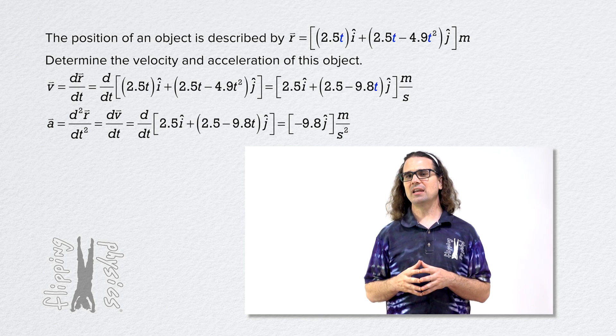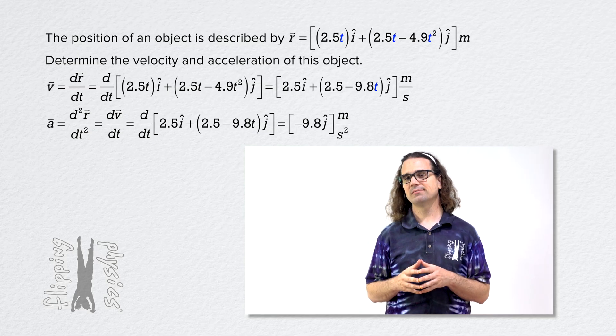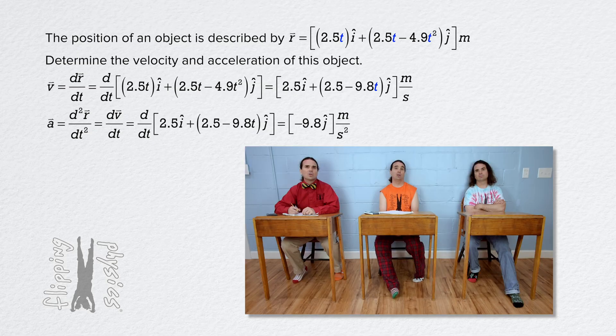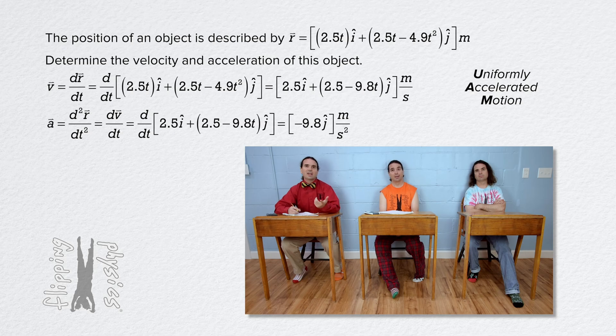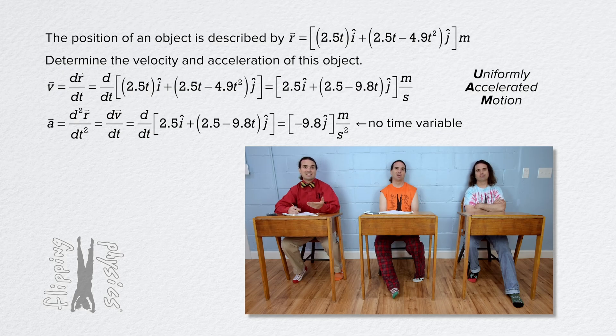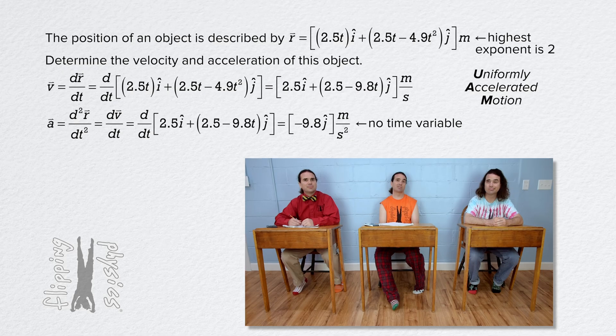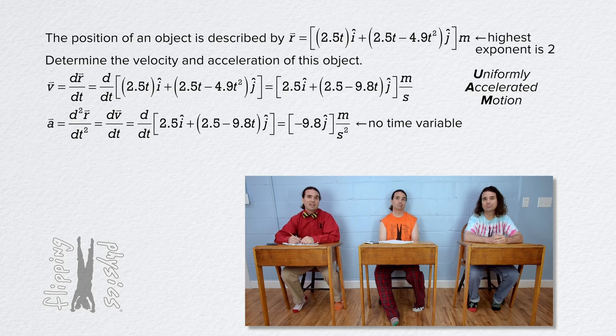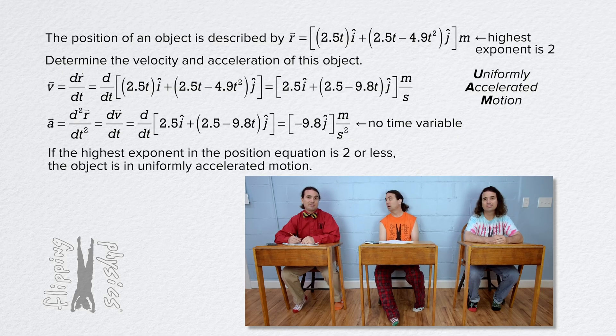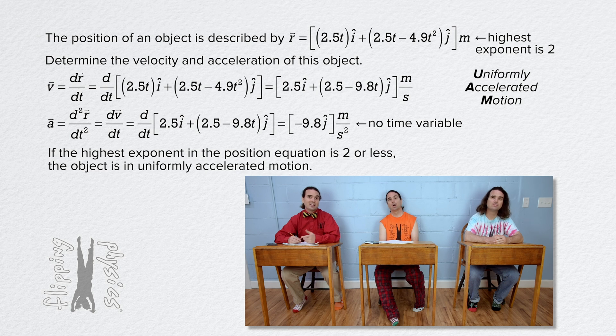Does anyone notice anything special about this motion? It's uniformly accelerated motion. Right. Acceleration of the object does not change as a function of time because this object is in uniformly accelerated motion. Its acceleration is constant. And you know what? We should have known that from the very beginning. Yeah, the highest exponent in the position vector is 2. Right. And if the highest exponent in the position vector is 2 or less, the object is in uniformly accelerated motion.